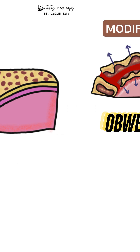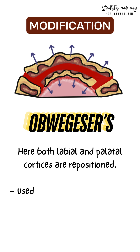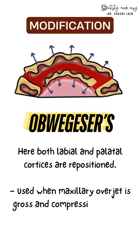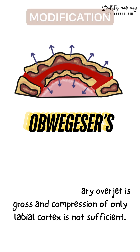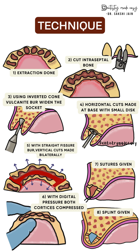There is one modification given by Obwegeser in 1966. In this, both the labial and palatal cortexes are repositioned, and it is used when the maxillary overjet is gross and inward compression of only the labial cortex is not sufficient. The technique begins the same as Dean's — extraction from canine to canine and cutting the intraceptal bone. Then the socket is widened with an inverted cone vulcanite burr. A small disc or burr is used to make horizontal cuts at the base of the socket, and a straight fissure burr is used to make vertical cuts bilaterally distal to the canine. With digital pressure, both labial and palatal cortical plates are compressed, sutures are given, and a splint or immediate denture is placed.